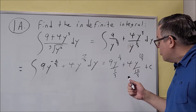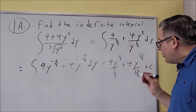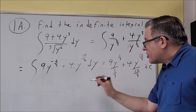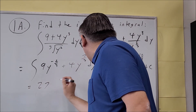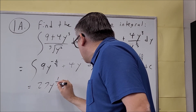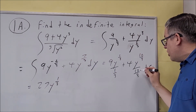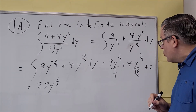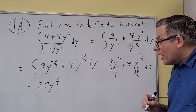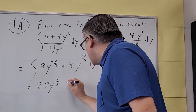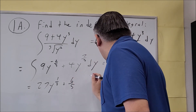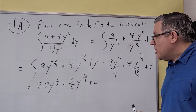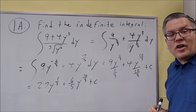Now we're going to rewrite this — we'll flip and multiply. That first term gives you 27y to the 1/3. For the second term, when you flip it, that gives you 12/10, which we can reduce to 6/5. So the final answer is 27y to the 1/3 plus 6/5 y to the 10/3 plus C.